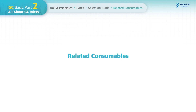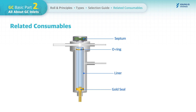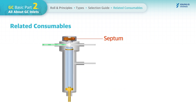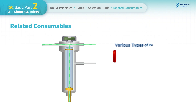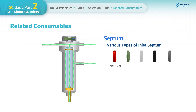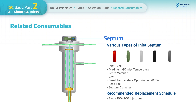There are certain consumables related to GC inlets that can affect GC results. A septum is a thin piece of silicone rubber or similar material located at the top of the GC inlet. It provides a complete seal between the sample injection and carrier gas flow, preventing contamination from outside. Various types of septa exist, differentiated by maximum inlet temperature, material, cost, bleed, temperature optimization, long life, and diameter. It is recommended to replace the GC inlet septum every 100 to 200 injections.